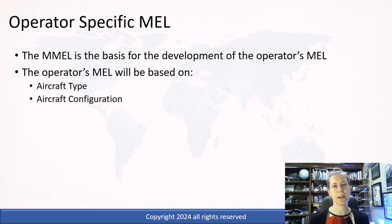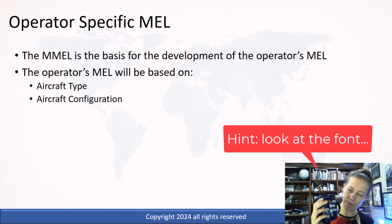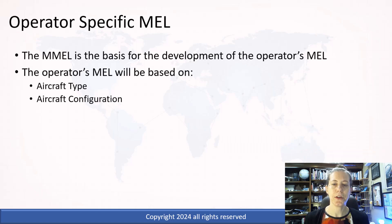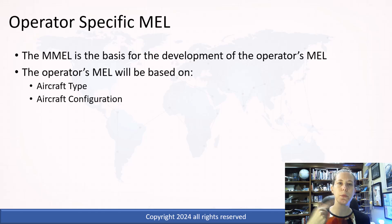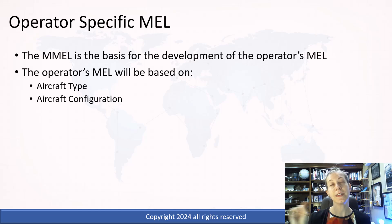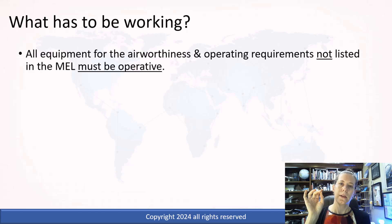We're going to base it on that aircraft type and the aircraft configuration. Essentially, the MEL is a list of things that can be broken as long as they are taken care of in a safe way — a list of things that can be broken, but the aircraft can still operate. It's implied that everything that is not in the MEL has to be operating.